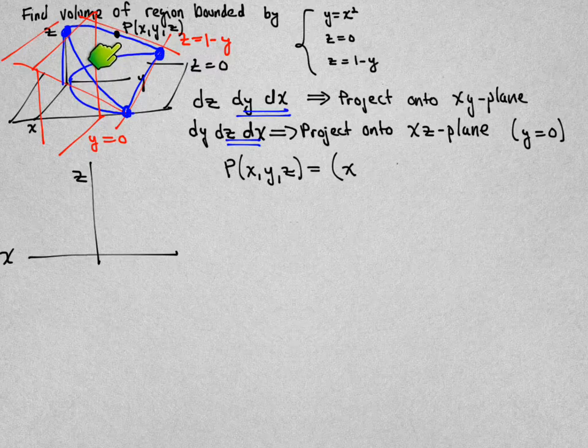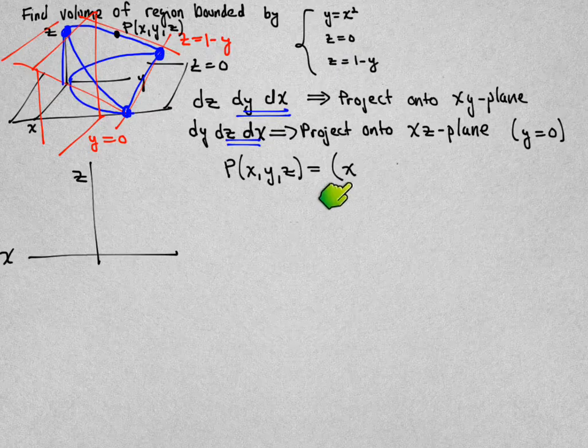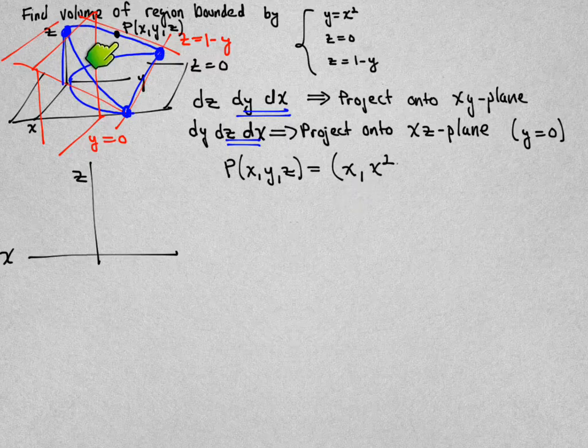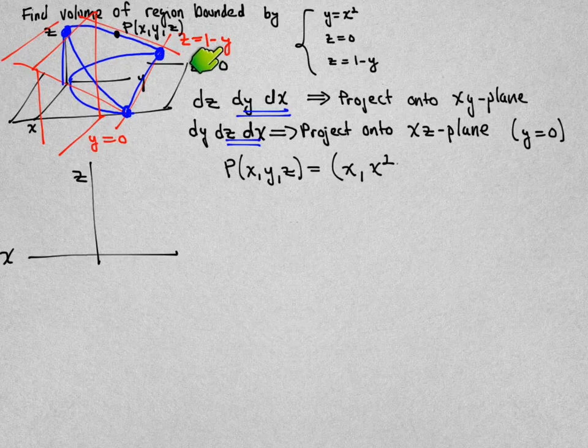Because that point is on the blue parabola here where y is equal to x-squared, once I know its x-coordinate, I know its y-coordinate must be the square x-squared. Because it's on the top of the surface where z is equal to one minus y, once I know the y-coordinate, which is x-squared, the z-coordinate must be one minus x-squared.